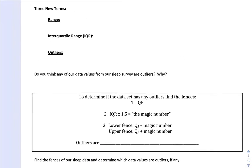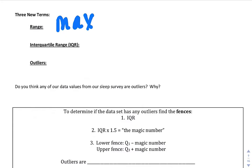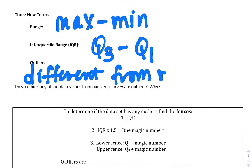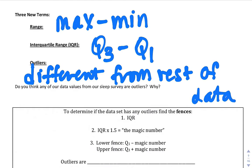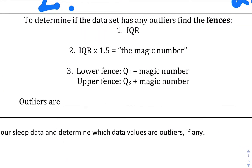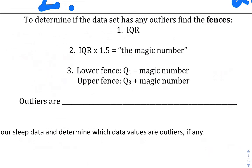Here are some terms: range is your maximum minus your minimum number. Interquartile range is Q3 minus Q1. An outlier is any data point that doesn't fit the rest of the data. To find outliers, we find the fences. There are three steps: step one, find the interquartile range; step two, multiply IQR times 1.5 — I call that the magic number; step three, the lower fence is Q1 minus that magic number, and the upper fence is Q3 plus that magic number. Outliers are outside the fences.